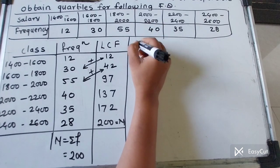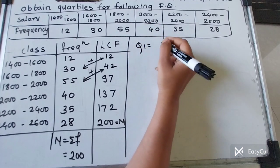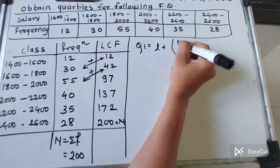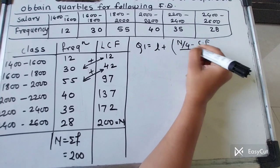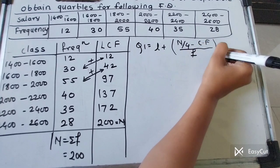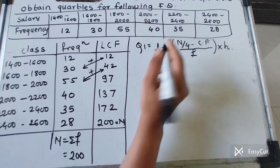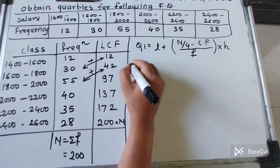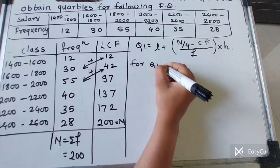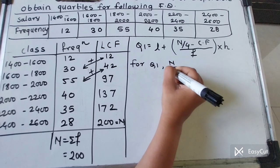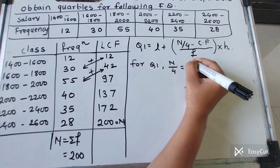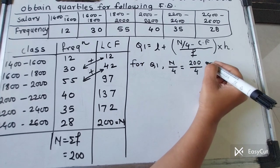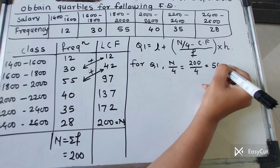Now apply the first formula. Q1 = L + (N/4 − cf) / f × h. For Q1, N/4 = 200/4 = 50, so we look for the 50th observation.